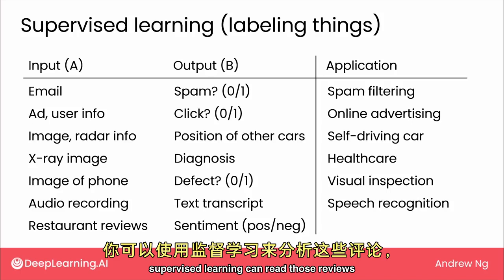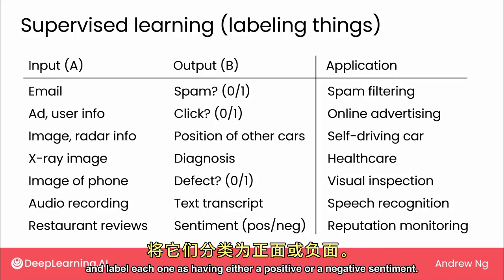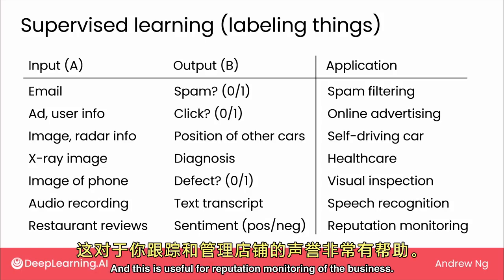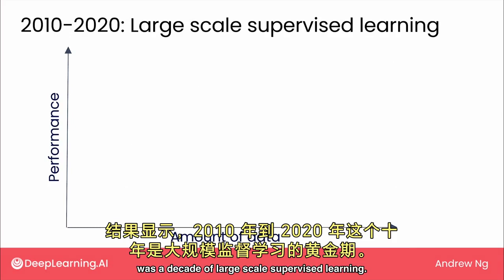supervised learning can read those reviews and label each one as having either a positive or a negative sentiment. And this is useful for reputation monitoring of the business. So it turns out the decade of around 2010 to 2020 was a decade of large-scale supervised learning.